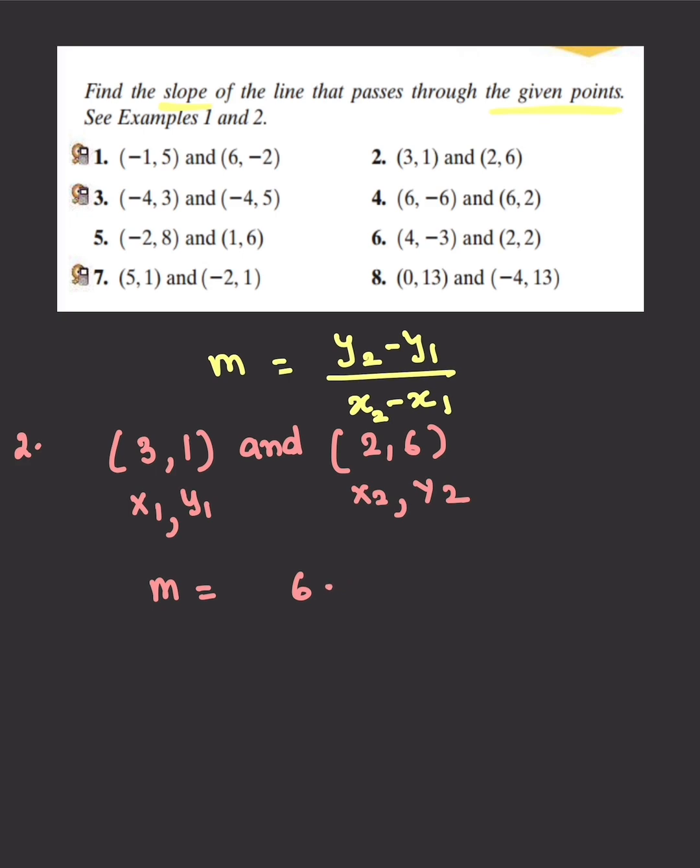6 minus 1 over 2 minus 3, so we got 5 over -1, or -5 is our slope. You can also write -5 over 1, or you can choose to ignore 1.